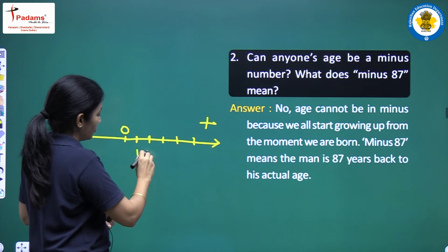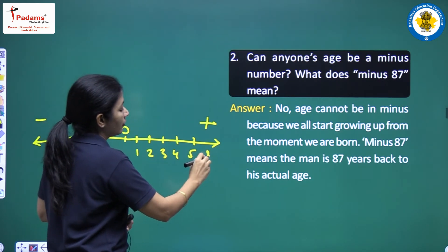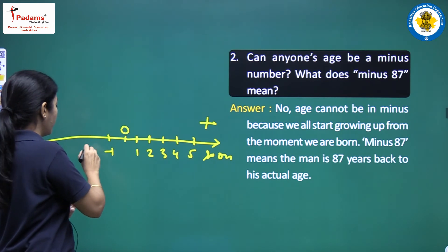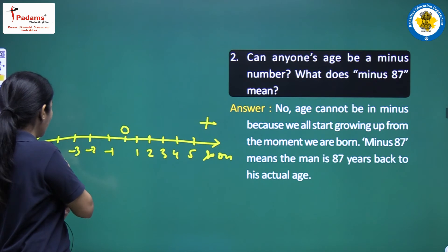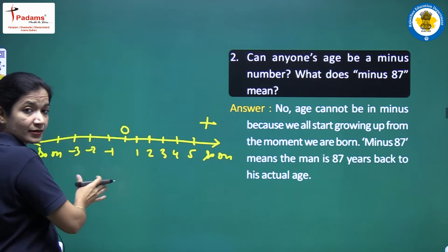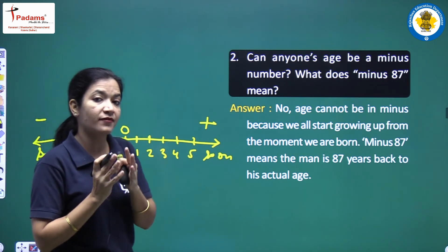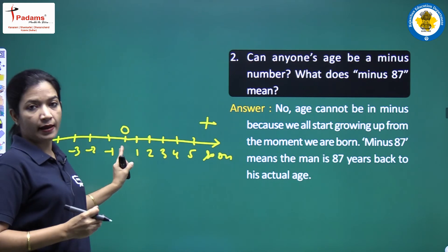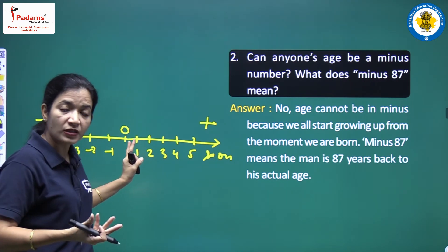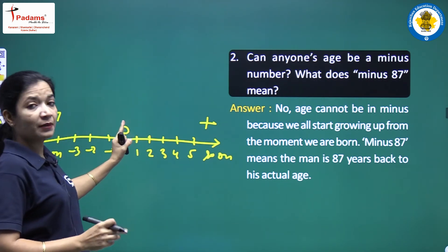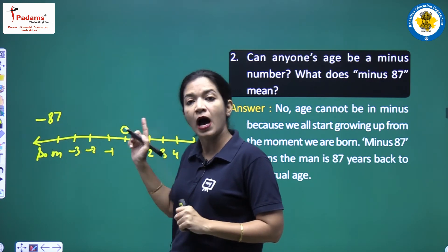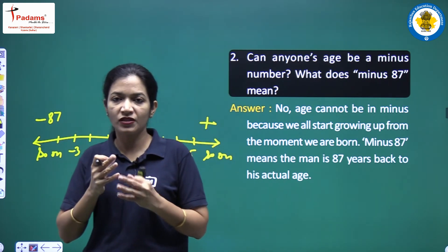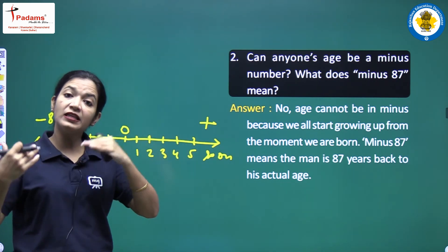What does minus 87 mean? Obviously I have explained this in the previous part. There is a number line. In this, on this side are minus digits and here are plus ones. It goes one, two, three, four, five and so on. And here it comes into minus one, then minus two, then minus three and so on.